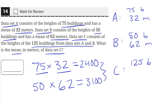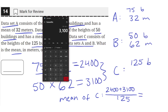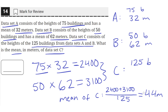So these are the total heights in both data sets all added together: 2400 and 3100. When calculating the mean for data set C, we take the heights of all buildings added together — 2400 plus 3100 — since data set C is composed of the buildings in A and B, and divide by the total number of buildings, 125. So 3100 plus 2400 divided by 125 gives us an answer of 44 meters. The mean height of buildings in data set C is 44 meters.